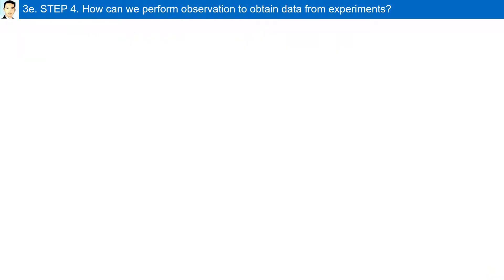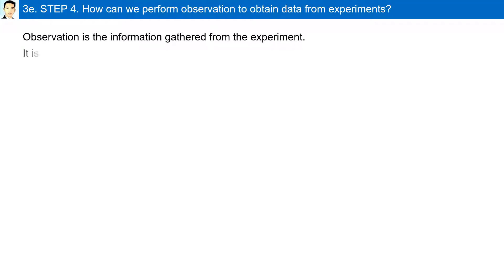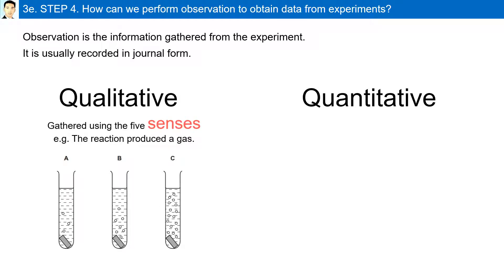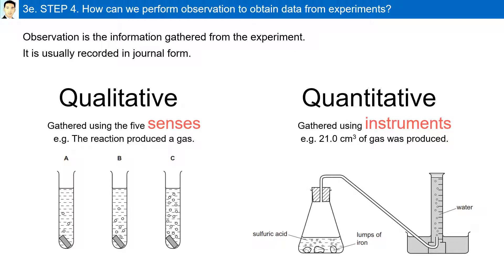How can we perform observation to obtain data from experiments? Observation is the information gathered from the experiment, usually recorded in journal form. There are two types of observation: qualitative and quantitative. Qualitative observation is gathered using the five senses — for example, the production of a gas. Quantitative observation is gathered using instruments — for example, 21.0 cm³ of gas was produced.